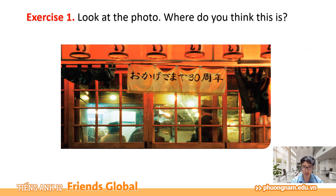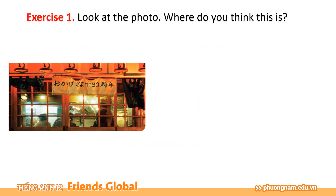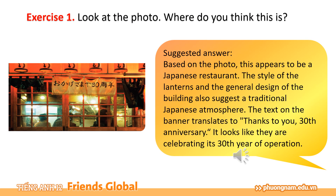Let's start with exercise number 1. Look at the photo. Where do you think this is? Chúng ta sẽ khởi động với bài tập số 1. Chúng ta cùng xem qua bức ảnh trên màn hình. Các bạn đoán xem bức ảnh này là ở đâu nhỉ? Và đây là đáp án gợi ý của thầy. Based on the photo, this appears to be a Japanese restaurant.